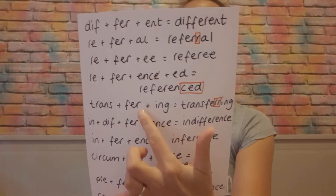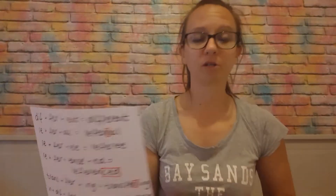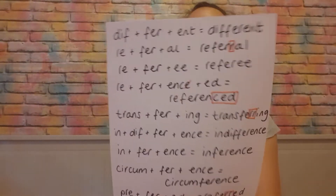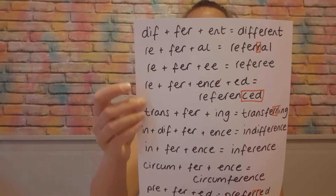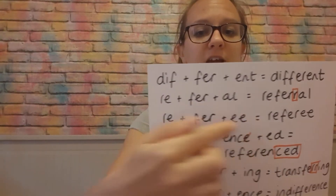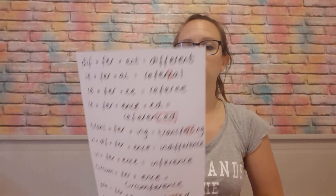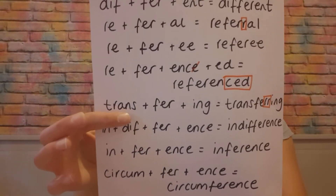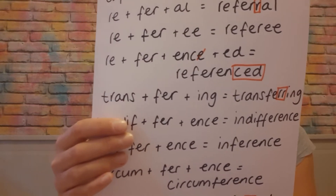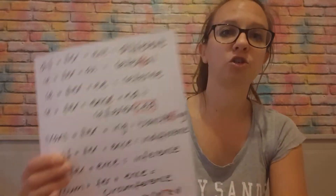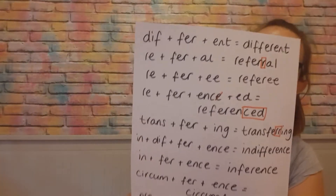Like 'transferring' — we do need the double r because 'fer' does sound like 'fur'. But 'referee' doesn't get a double r when we add suffixes, because we say 'referee', not 'referry'. It's all to do with that sound of 'er' — whether we double that r or not. It's to do with the stressing of the syllable: if that syllable is stressed and we say 'er', that is when we need the double r. For 'transferring', we do need it — we say 'transferring', not 'transfering'.